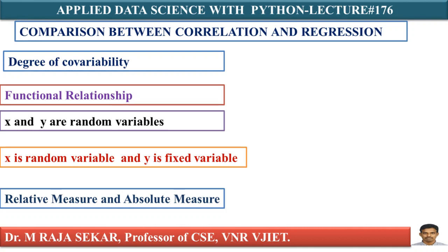Let me discuss the comparison between correlation and regression. The correlation coefficient is a measure of the degree of covariability between two variables. While regression establishes a functional relationship between dependent and independent variables, so that the former can be predicted for a given value of the latter.